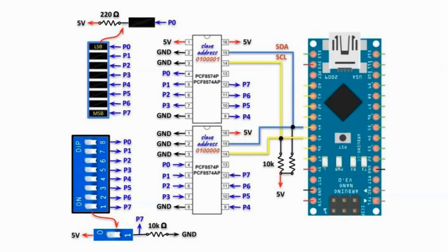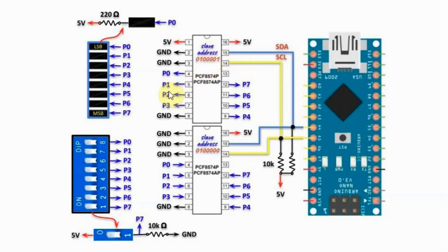The circuit operates as follows: the user will provide a byte value through the DIP switches, which is then fed into the input device. The input device will then convert it into serial data and send it over the I2C bus to the microcontroller. The microcontroller will then take the byte and send it serially to the output device, which converts it into a parallel byte and displays it on the 8-bit bar graph display.